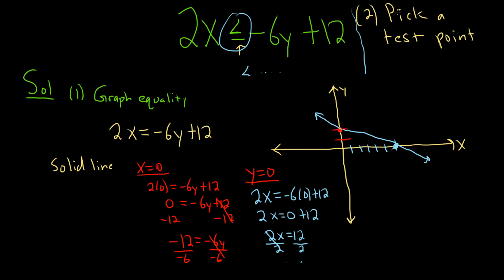And again, you can pick any number, any ordered pair that's not on the line. So let's do 0, 0. So we're just going to plug in our test point into our inequality. So 0, 0 is here. So if it's true, we're going to shade down here. If it's false, we're going to shade up here.